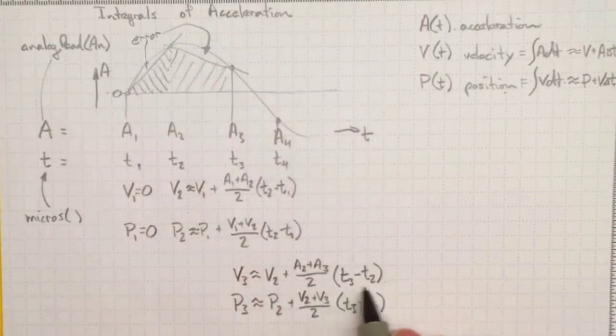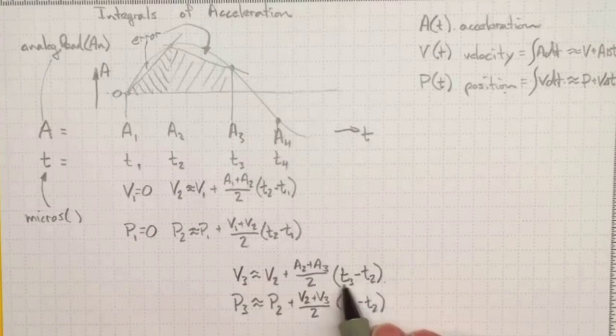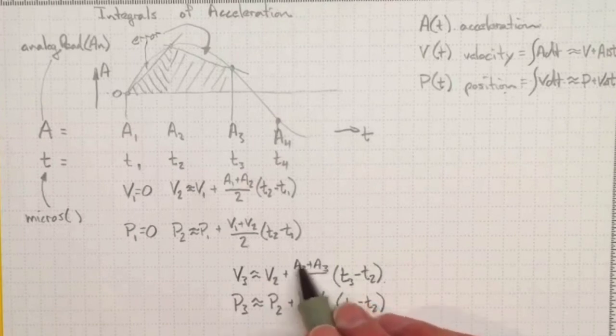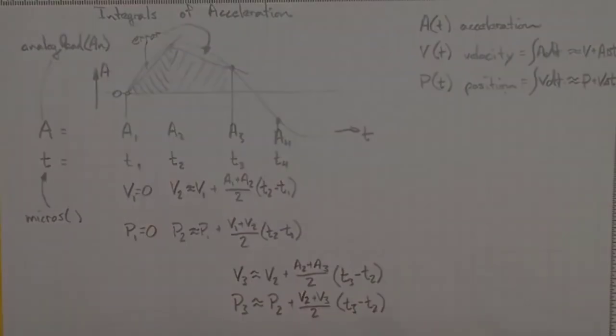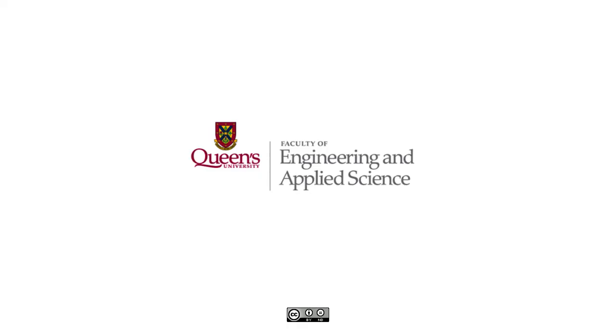We've only got to worry about the same thing we did with the differentiation. These time steps might get a little too short. But these are always going to be fairly substantial numbers so we should get a little better behavior than we get with the differentiation. And let's try it with a programming example.